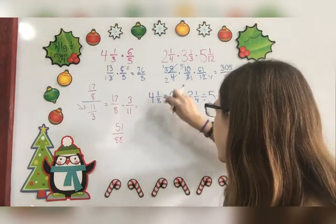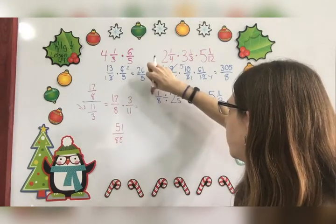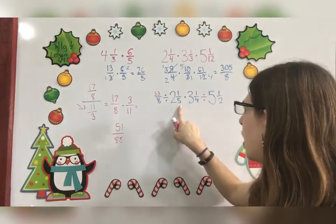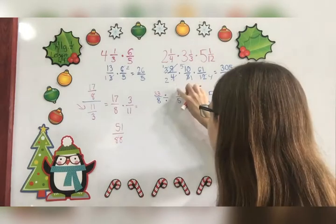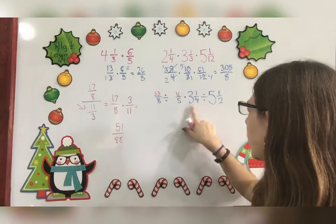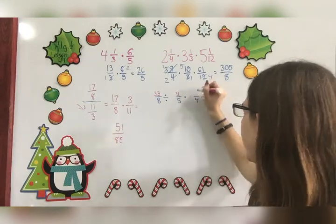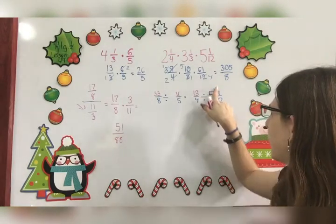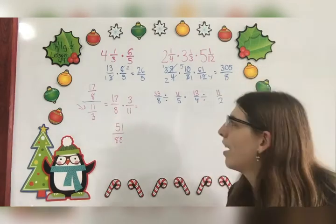4⅛ becomes 8 times 4 is 32 plus 1 is 33, so this is 33/8. 2 times 5 is 10 plus 1 is 11, so this becomes 11/5. 4 times 3 is 12 plus 1 is 13, so this is 13/4. 2 times 5 is 10 plus 1 is 11, so this is 11/2.